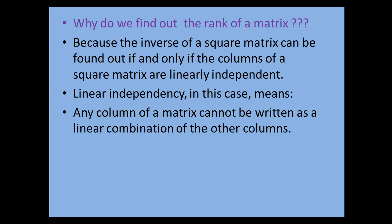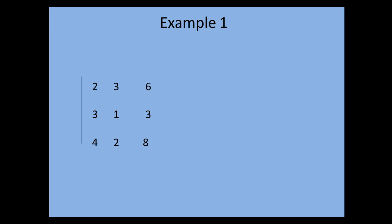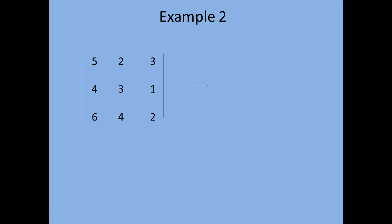Linear independency means any column of a matrix cannot be written as a linear combination of the other columns. For example, in this 3x3 matrix, column 3 is just a linear combination of the two columns — column one multiplied by column two results in the third column. In example 2, we have another 3x3 matrix where the first column is just the addition of the second and third column, so the first column is a linear combination of the second and third column.